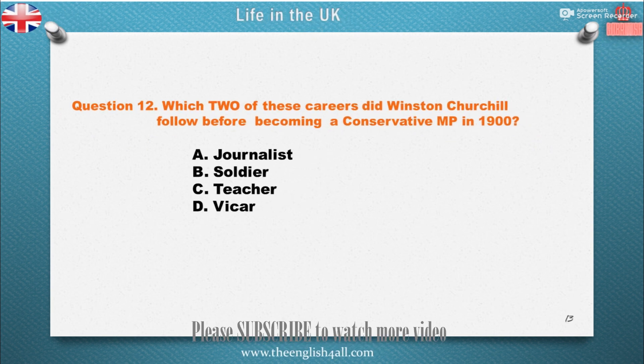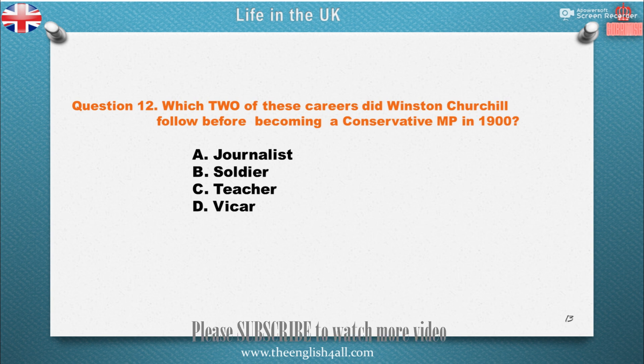Question 12: Which two of these careers did Winston Churchill follow before becoming a Conservative MP in 1900? A. Journalist. B. Soldier. C. Teacher. D. Vicar. The correct answer is: Journalist and Soldier.